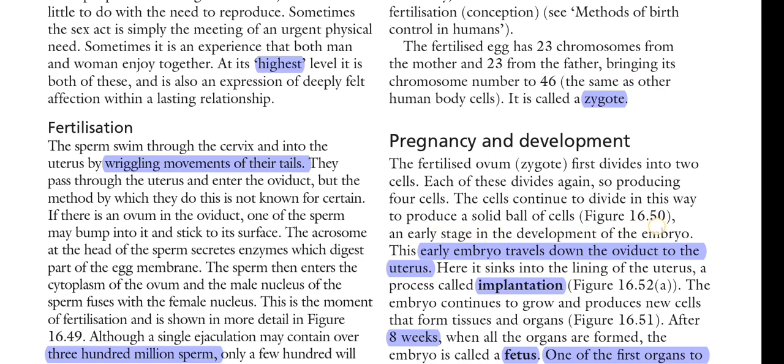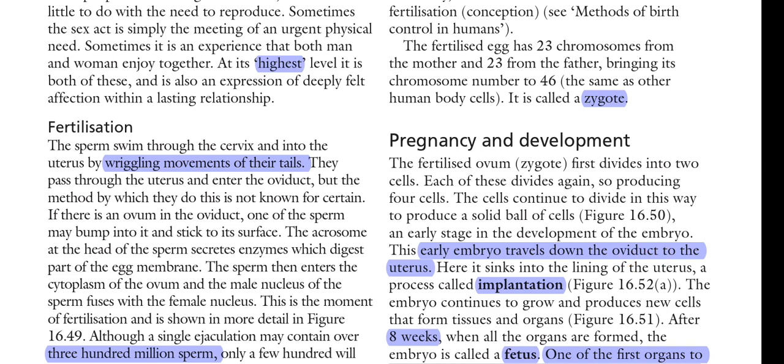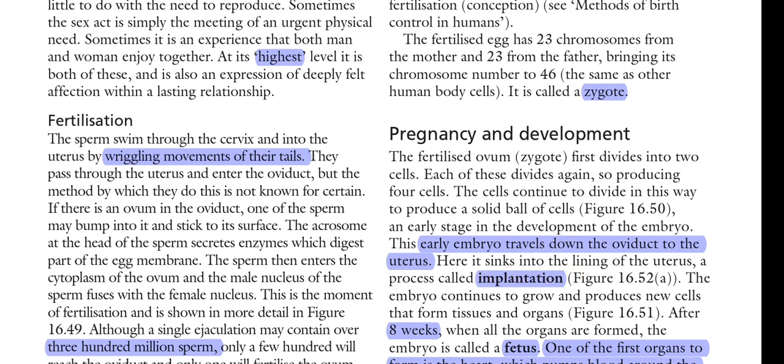This is an early stage in the development of an embryo. The early embryo travels down the oviduct — also known as the uterine tube or fallopian tube — to the uterus. Here it sinks into the lining of the uterus, and this process is called implantation, occurring in the endometrium.